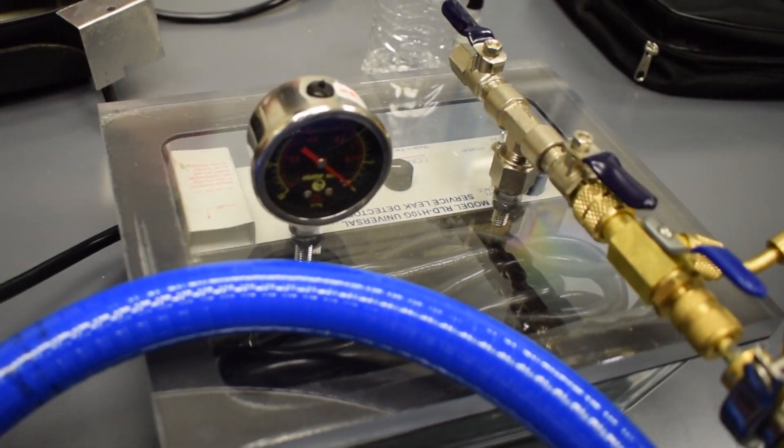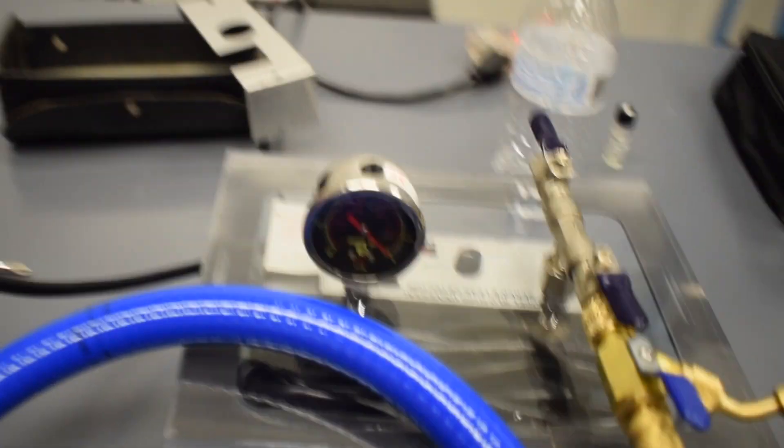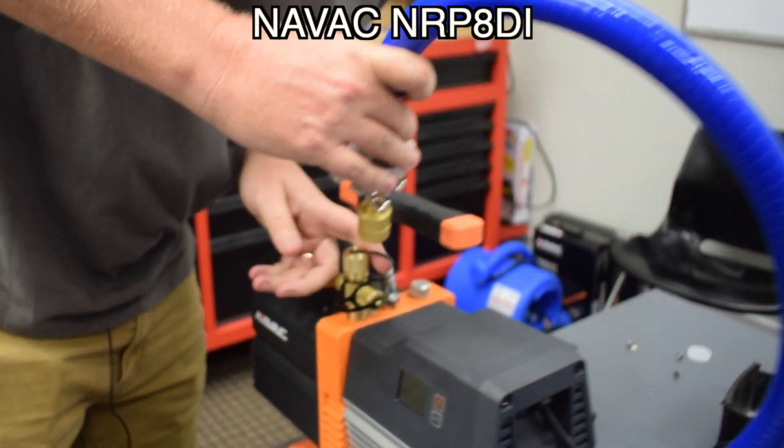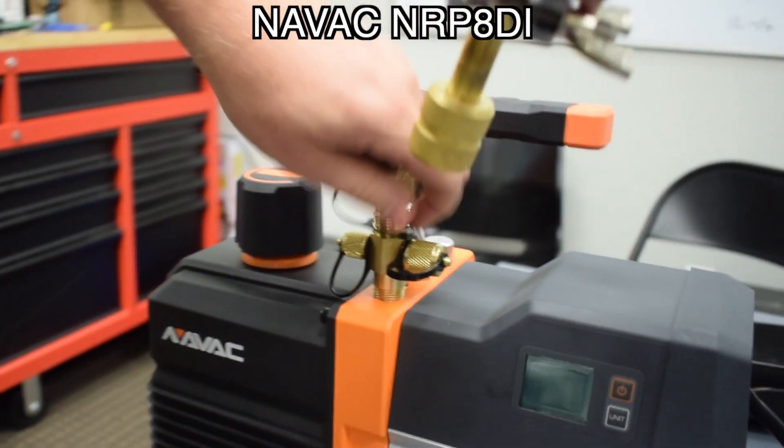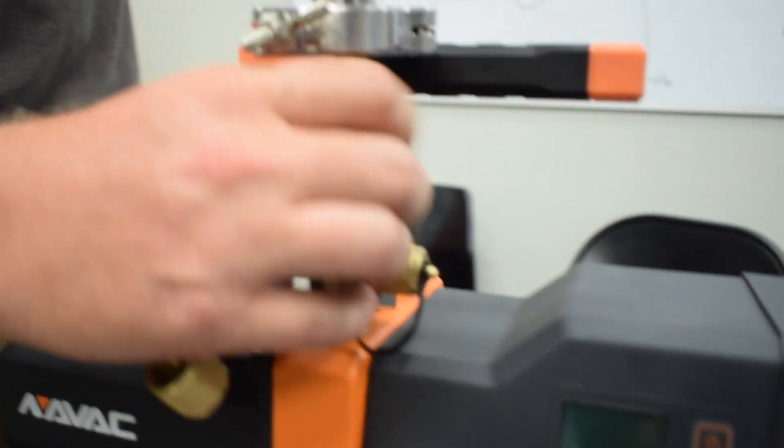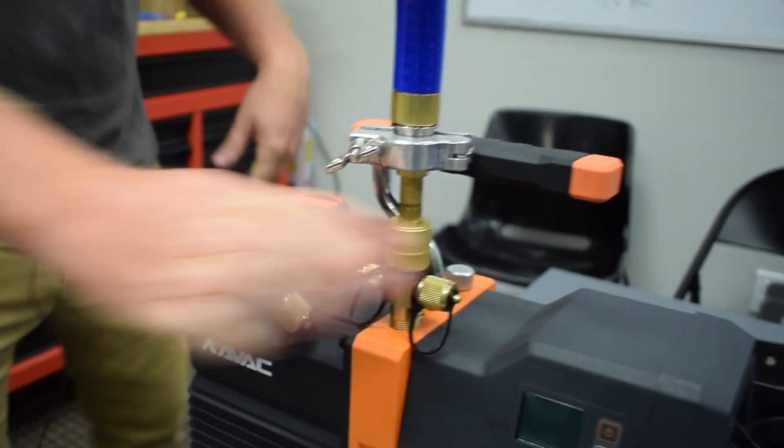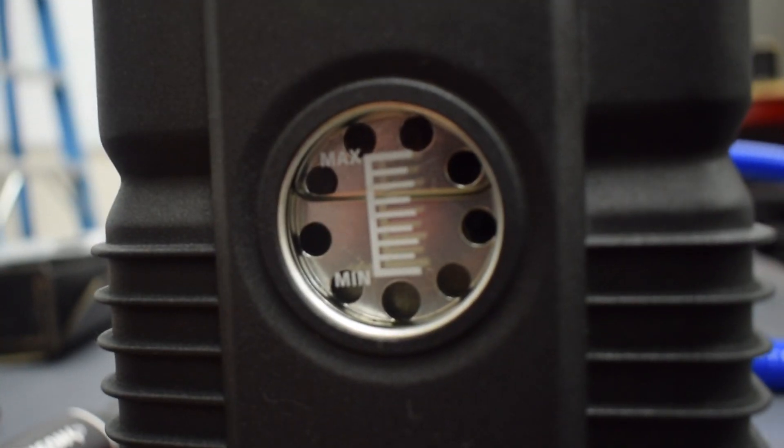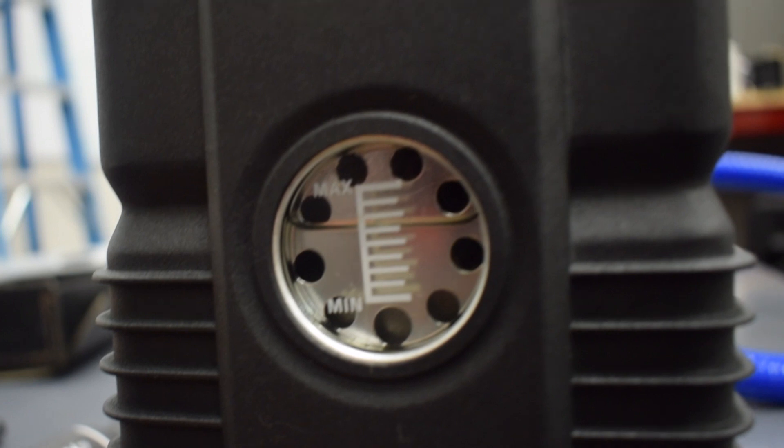All right, I'm gonna attach our True Blue hoses to our Navac pump. This is the Navac NRP-E8DI digital DC vacuum pump. Let's go ahead and check our vacuum pump oil. Vacuum pump oil is right where it should be, maybe a little bit on the high side, but we're right there.